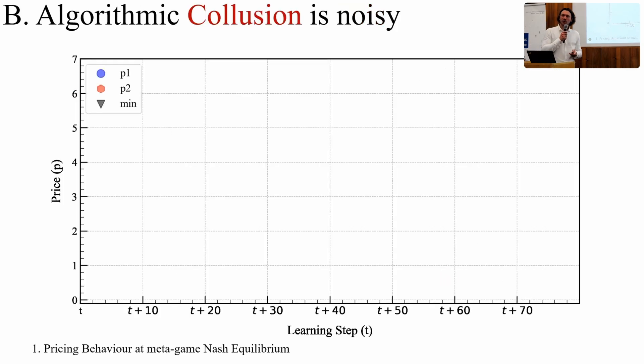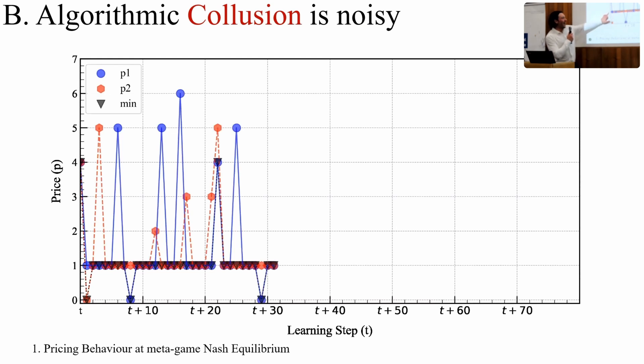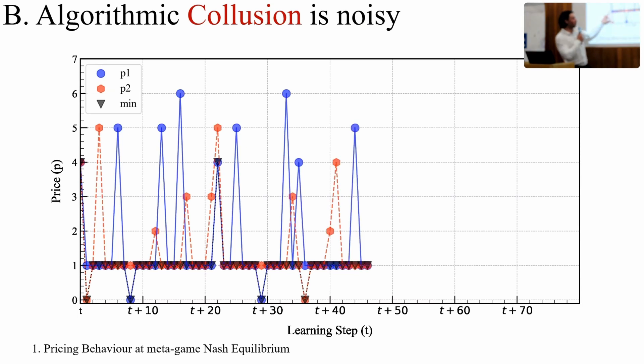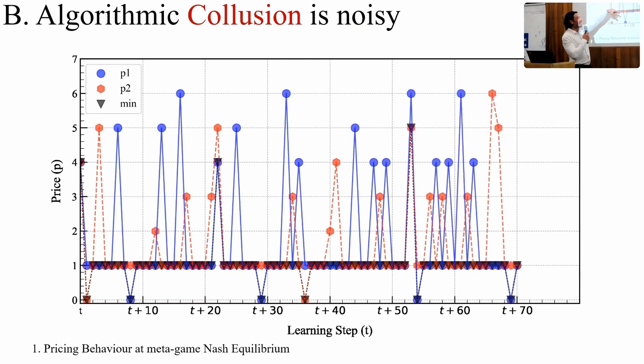So how does this collusion look like? At the Nash equilibrium, we find the following kinds of patterns. It seems the algorithms have learned to price at the equilibrium price, where they make sort of below which they wish not to go. And that's where the vast majority of their prices lie, but occasionally they jump up. They're quite random, so they occasionally jump up. And in these jumps, they are able to undercut each other and achieve some advantage. So this is at the Nash equilibrium.